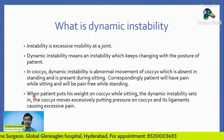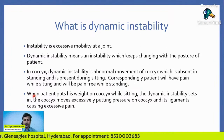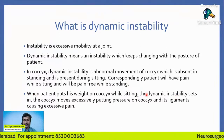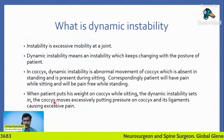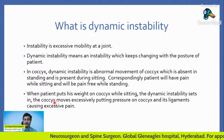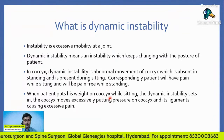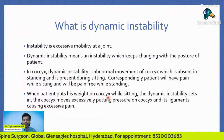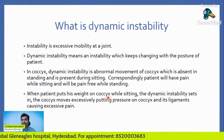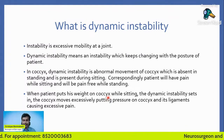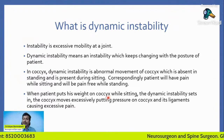When a patient puts weight on the coccyx while sitting, the dynamic instability sets in — the coccyx moves excessively, putting pressure on the coccyx and its ligaments, causing excessive pain. To summarize: dynamic instability is not present always; it comes into picture only while sitting, so the patient will also have pain only while sitting.